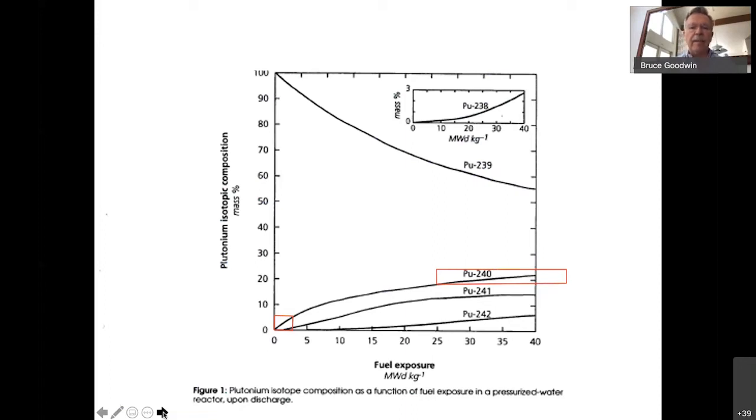So as a function of time, if you want to make weapons-grade plutonium, you leave it in for a very short period of time so that you don't have more than about 5 or 6 percent 240. So that's sort of down there where that red square is down in the corner. So you leave it in a short time, take it out, reprocess the fuel, take out the weapons-grade plutonium, and move forward.